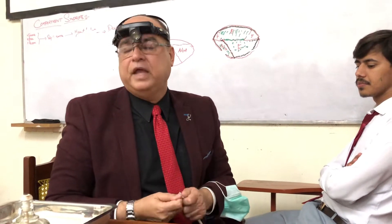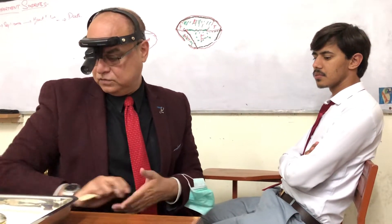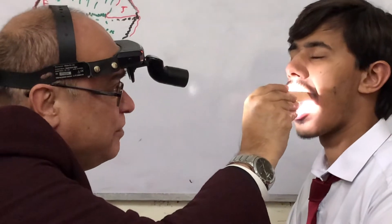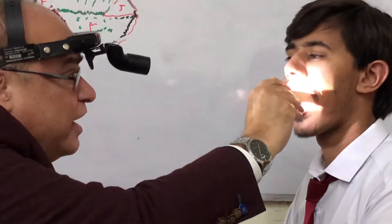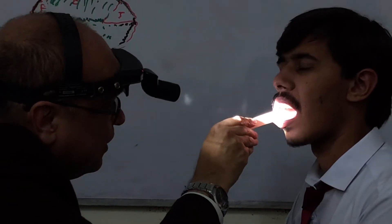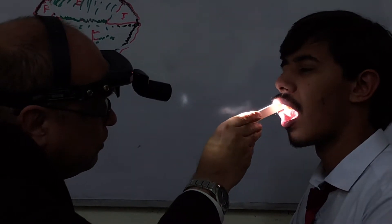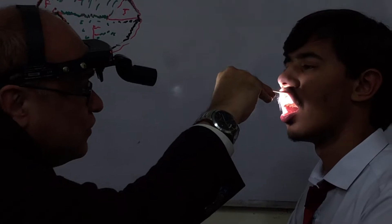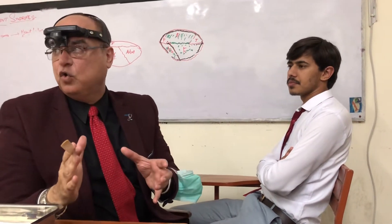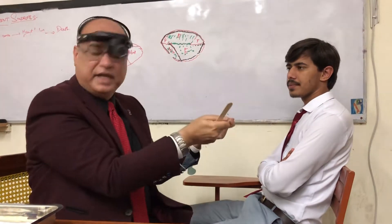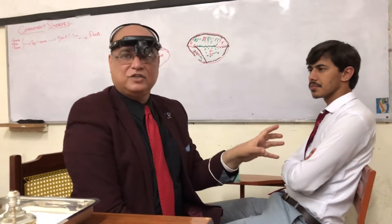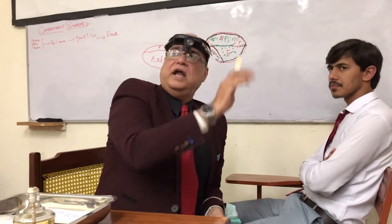Then you take the tongue depressor. Still, we are at the oral vestibule. You will retract the cheek and see the upper gingivolabial fold, then cheek mucosa — especially with reference to parotid duct opening against the upper second molar — lower gingivolabial fold, and inner surface of the lips. Then the other side: cheek mucosa with reference to parotid duct opening, upper gingivolabial fold, and inner surface of the lip. Very smoothly and gently, you rotate all around and see the whole oral vestibule. Once done, then you go for depressing the tongue and looking at the oropharynx.